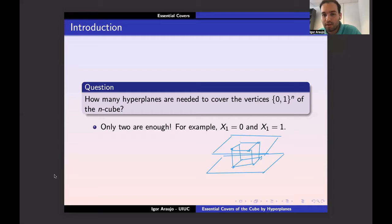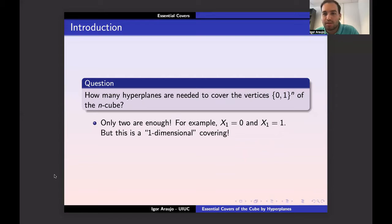You can take these two parallel hyperplanes: x₁ equals zero and x₁ equals one — those two hyperplanes cover all vertices. But this is kind of a boring solution because you're actually only using one dimension. So in some sense we're not interested in that kind of covering; we want to use the full n dimensions.